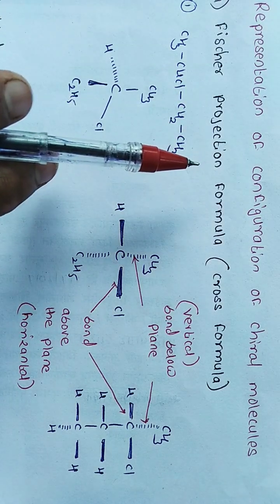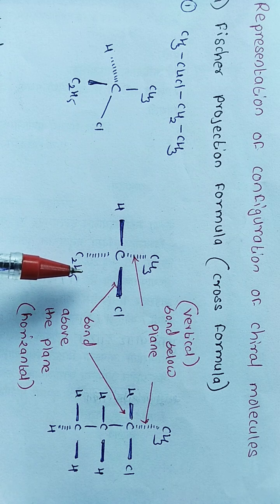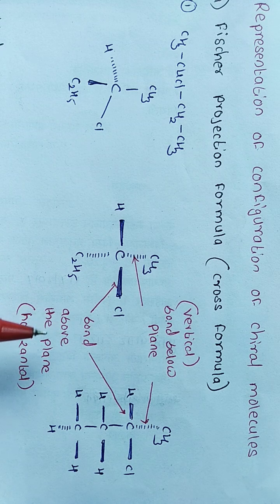In this feature projection formula, this vertical line, this vertical bond represents bonds below the plane and horizontal lines represent bonds above the plane.